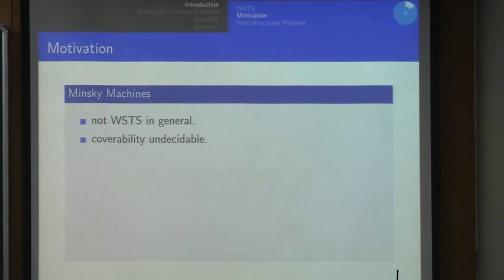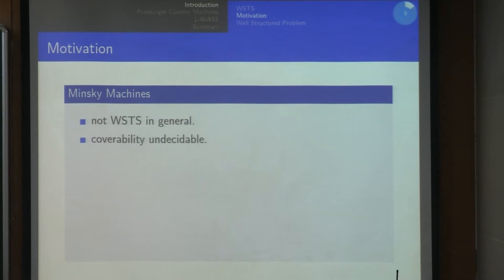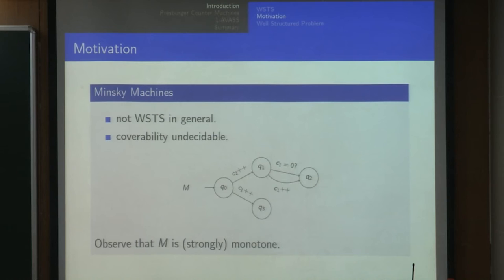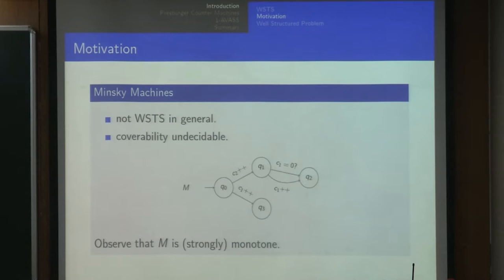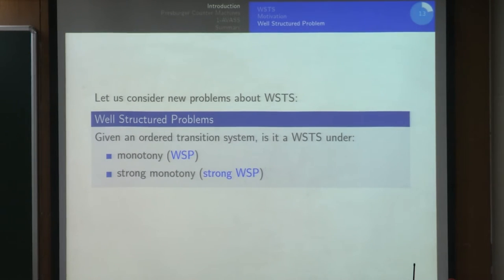Now we come to the motivation. Suppose we are given a class of transition systems which is not decidable in general, but we're given a specific instance and want to check if the problem can be solved on this model. If the model is nice enough—if it satisfies monotony—then we can use the results on well-structured transition systems. So the question we asked was: given a transition system, can we check whether it is well-structured or not? That is the well-structured problem, and correspondingly the strong well-structured problem asks whether it is strongly monotonous.